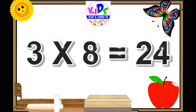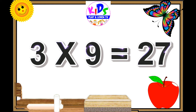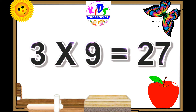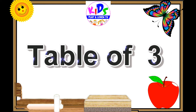Three sevens are 21, three eights are 24, three nines are 27, three tens are 30.